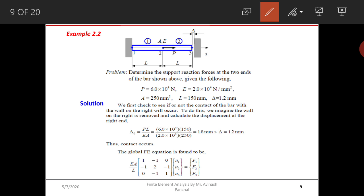Here we have this problem. Determine the support reaction forces at the two ends of the bar shown above given the following: load P acting at the center of this bar is 6 × 10^4 Newton. E, Young's modulus or modulus of elasticity, is equal to 2 × 10^4 Newton per mm square. Area throughout the same cross section is present and it is equal to 250 mm square.